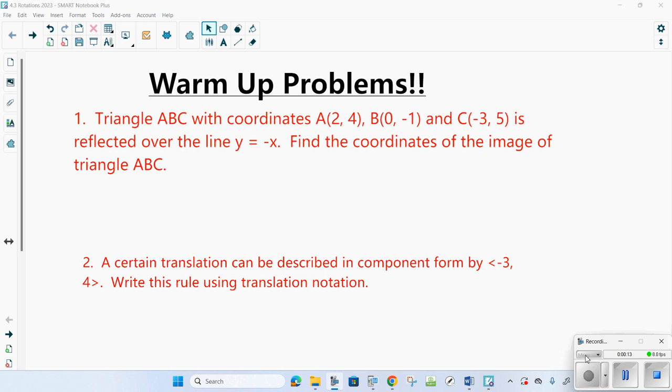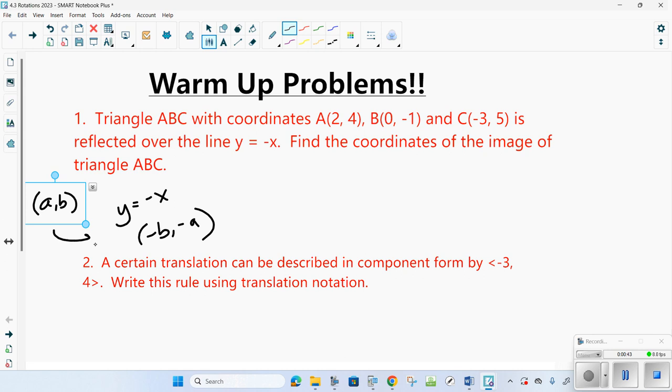Triangle ABC with coordinates A(2, 4), B(0, -1), and C(-3, 5) is reflected over the y equals negative x axis. Find the coordinates of the image. When you're not given a graph, it's probably easiest to look at the rule. The rule for a reflection across the y equals negative x axis is negative b, negative a. So if you have a point and you want to do a reflection across y equals negative x, then A prime, you take the a and the b, you flip them and change the sign. So A prime would be negative 4, negative 2.